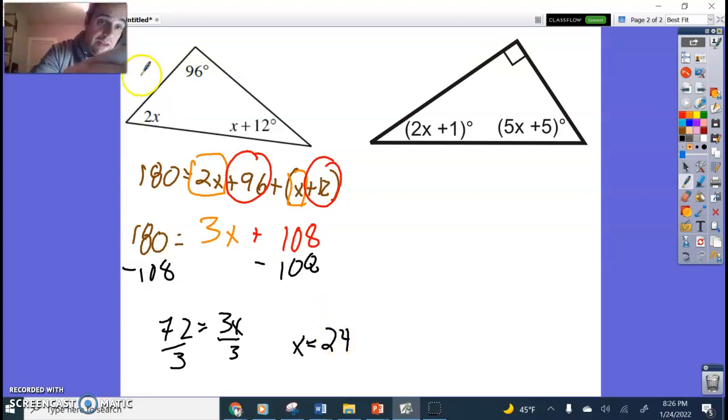If I plug 24 into right here, this angle would be 24 times 2, which should be 48 for the degrees for the angle. And this one, if I plug in 24 plus 12, should give me 36 degrees. The angle and X are often going to be different. You're looking for X, which is part of an angle. Key difference there.